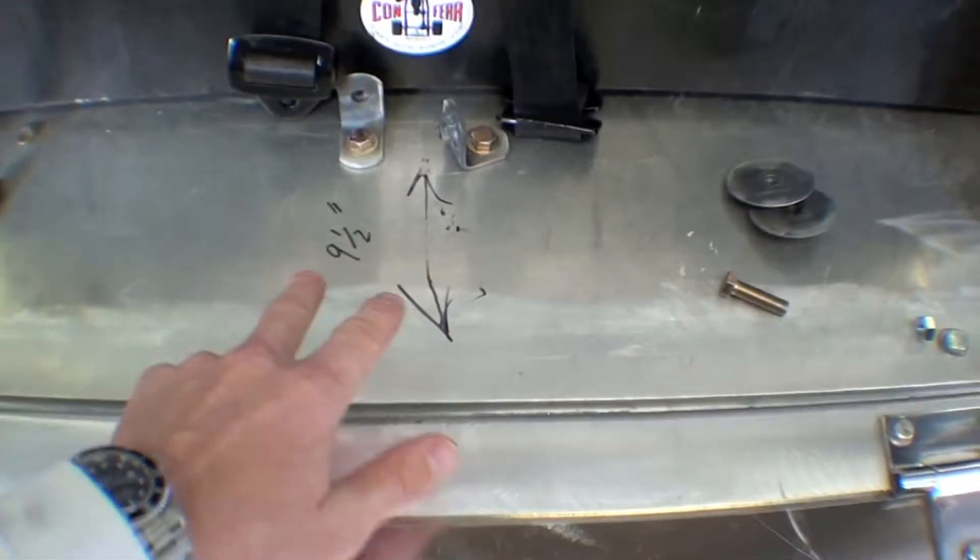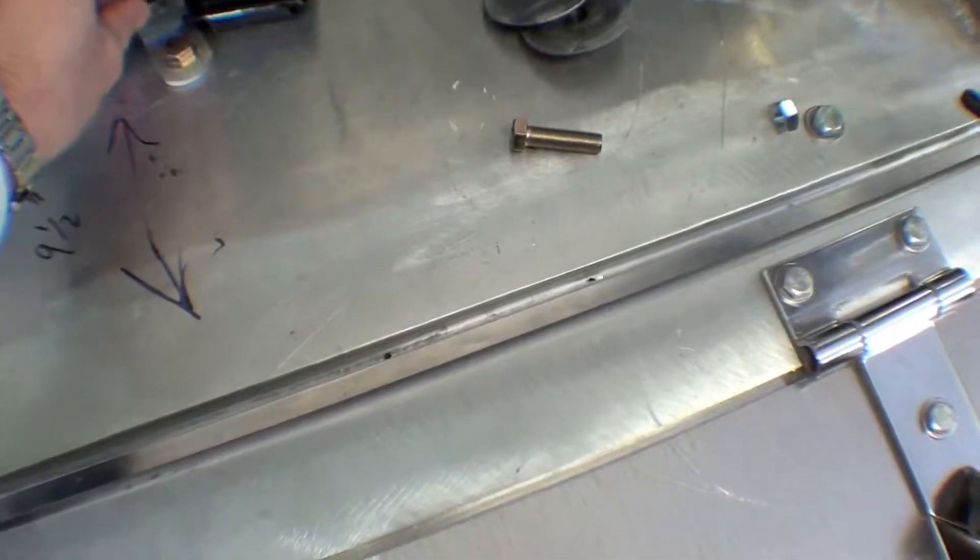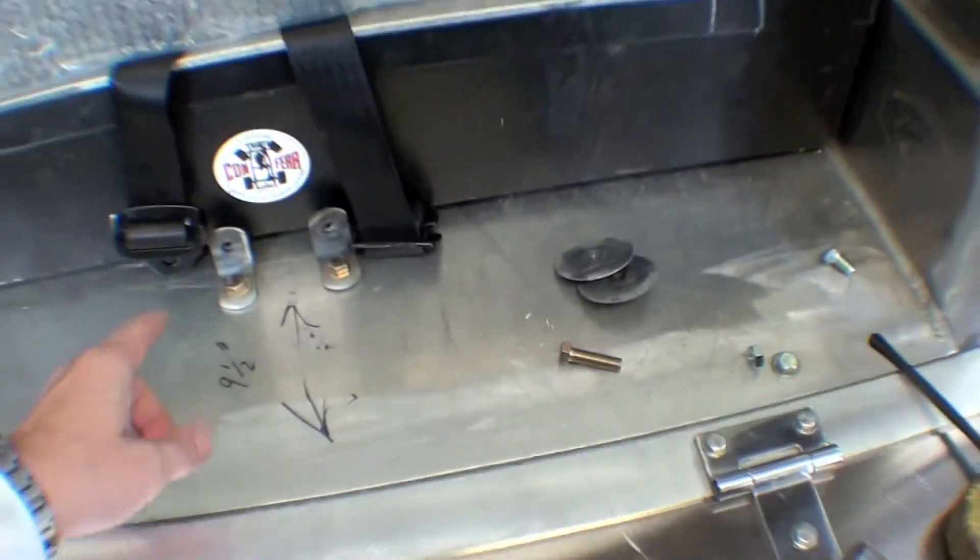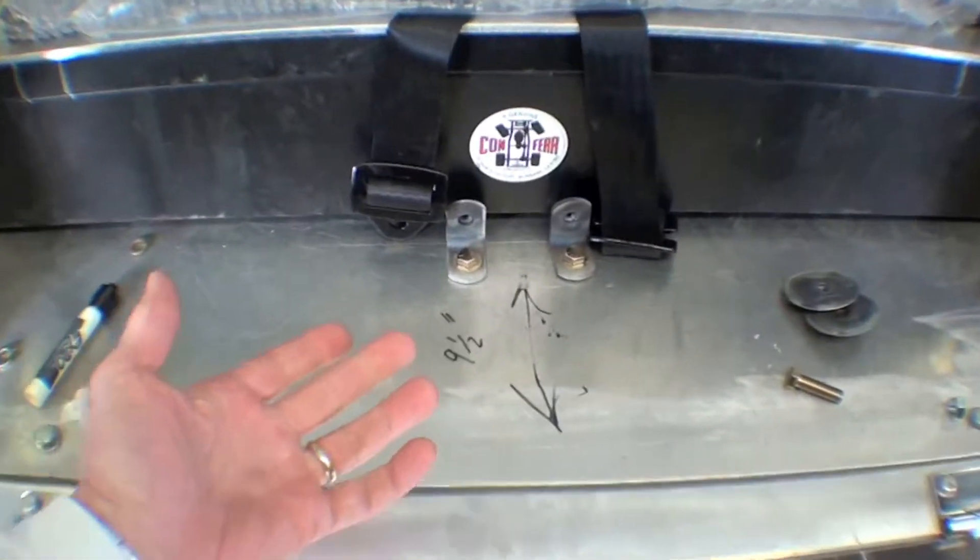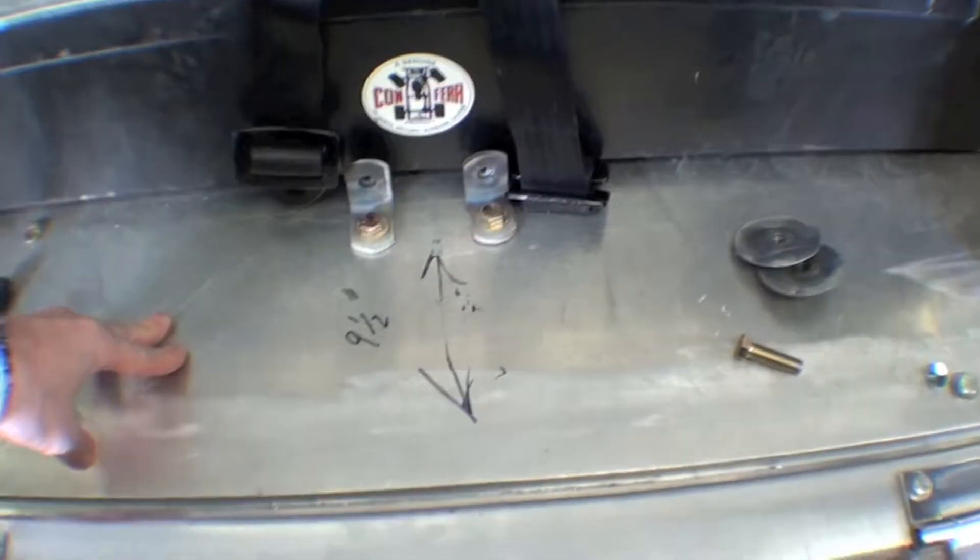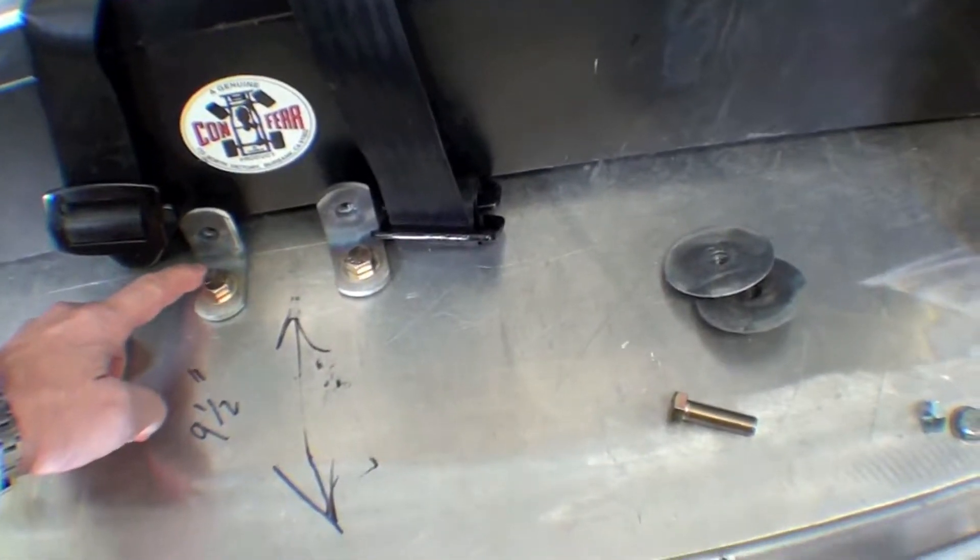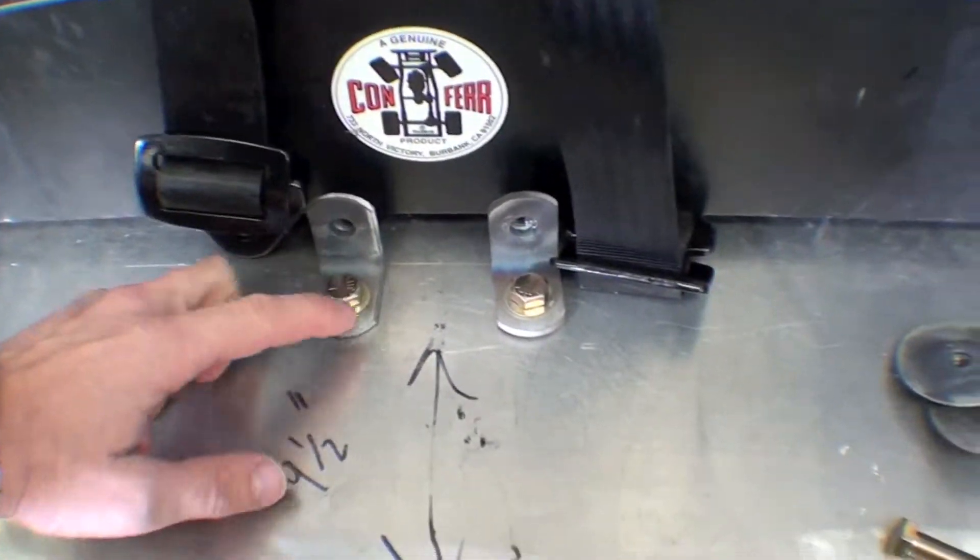It goes right down through here. What we're going to do is put this little L-bracket that we have. These L-brackets come from another aftermarket seat manufacturer, so we're using those, and they will go right to the floor.